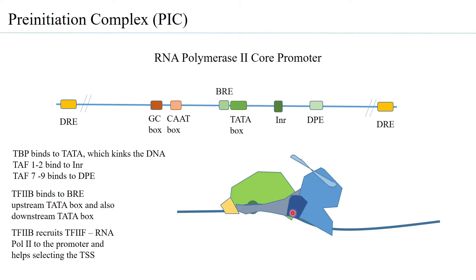TF2F has two subunits important in transcription. The small subunit is strongly bound to RNA polymerase 2, and the larger TF2F subunit has the ATP binding and ATP-utilizing region.